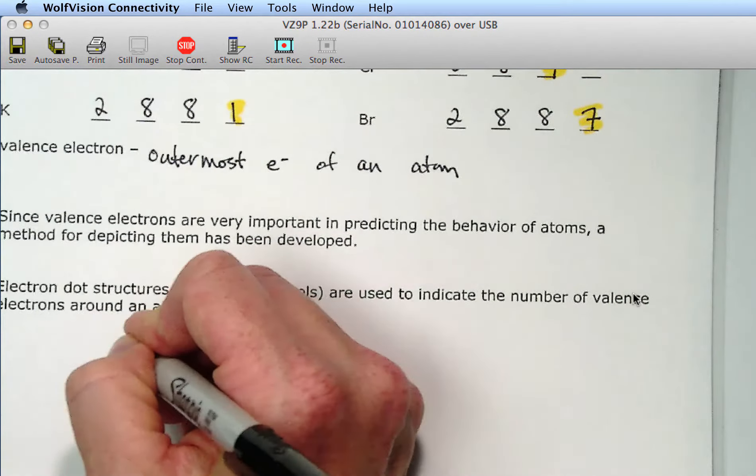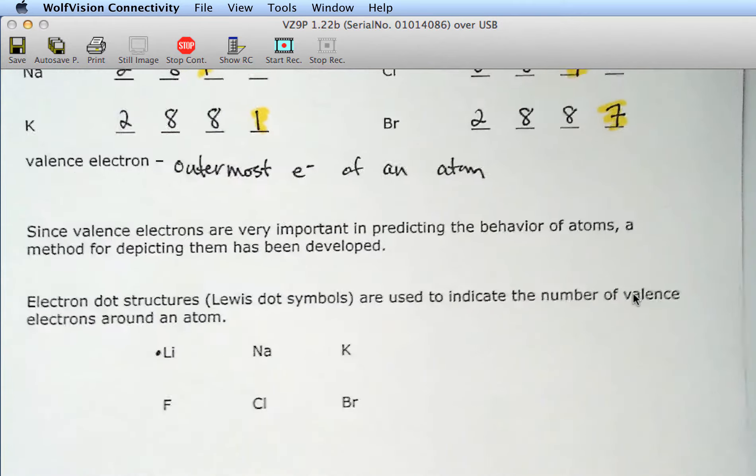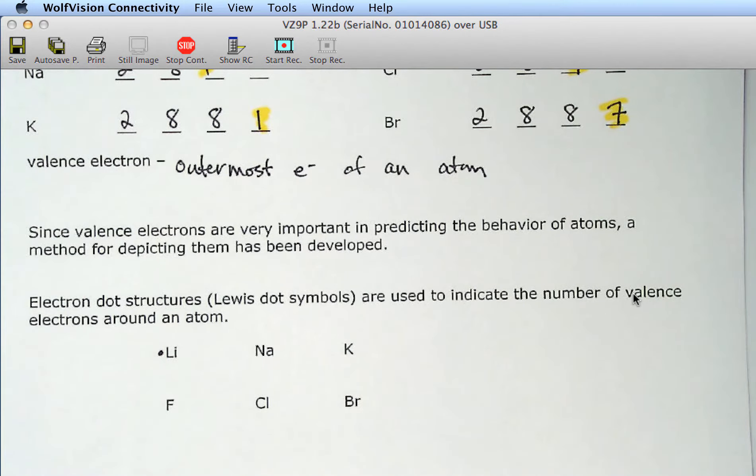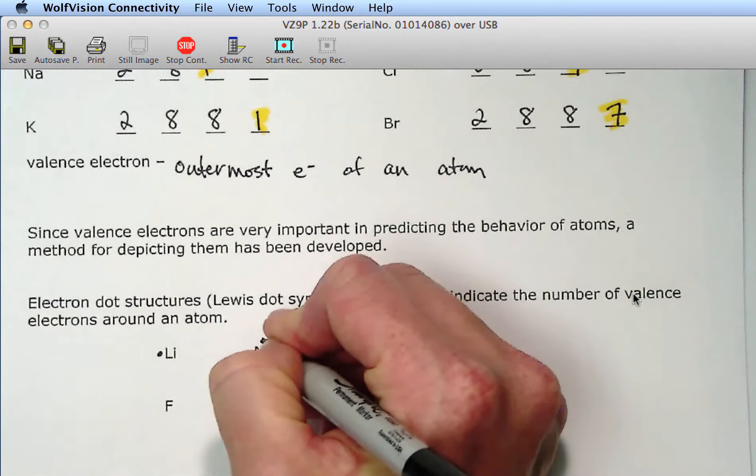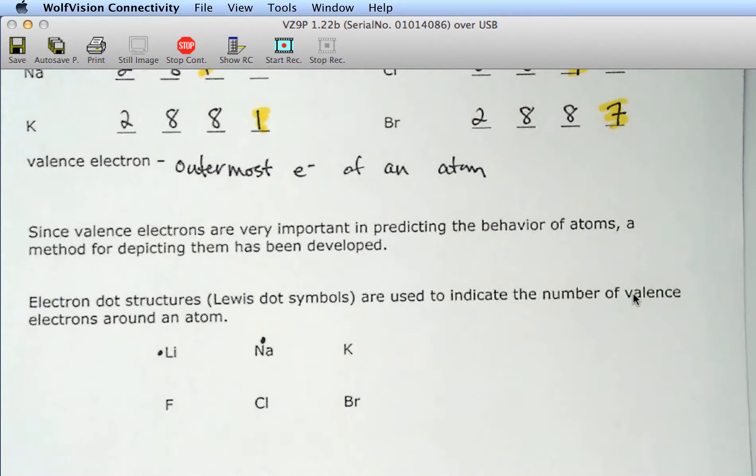Valence electrons are very important in predicting the behavior of atoms. And so because they're so important, a way of drawing pictures of them has been developed. So very quickly you can understand why they behave the way they do. So remember that lithium, sodium, and potassium, they all belong in group 1 or the alkali metals. They have one valence electron. So the electron dot symbol or dot structure is just going to have the name or the abbreviation, the element symbol, with one dot beside it. Now there's no rule saying that you need to have your dot on the left side or the top or the bottom or the right. Anywhere you can have your dot. So that just tells you that there's one valence electron.